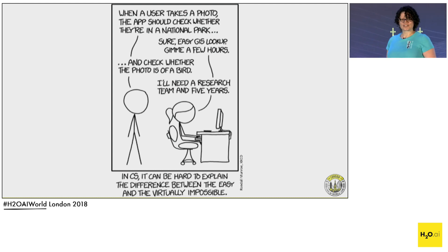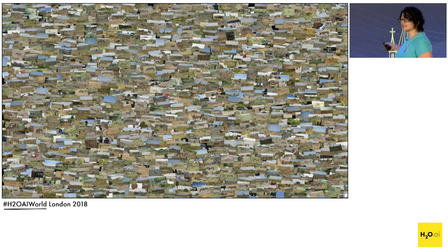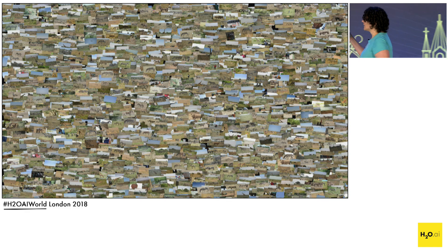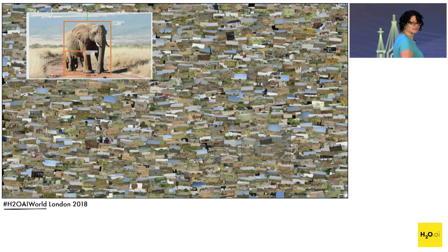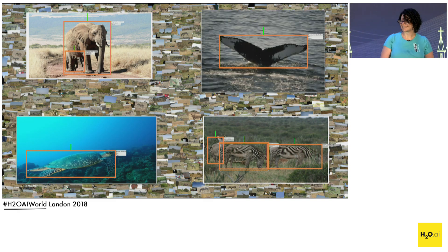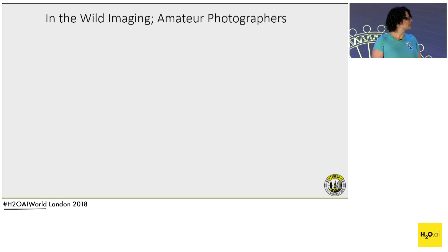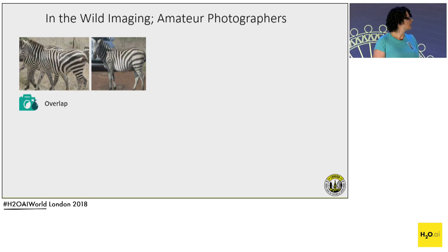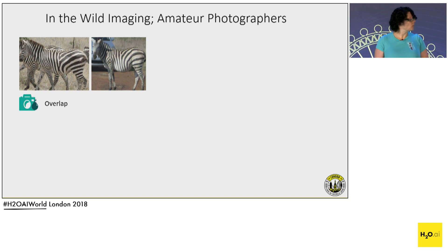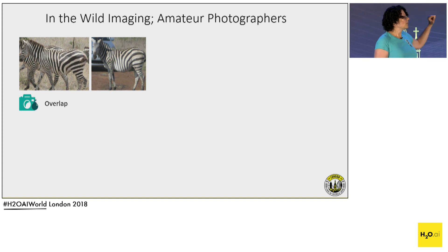A couple of research grants later, machine learning to the rescue. Can you find all the pictures of elephants in that mess? Machine learning can. We can take that mess and find all the pictures of animals in it, find where the animals are in those pictures, and we can also identify individuals.